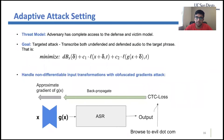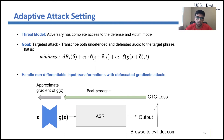The evaluation is more interesting in the adaptive attack setting, where we assume the adversary has complete access to the defense and victim model. The attacker modifies the objective to transcribe both x+delta and g(x+delta) to the target transcription t. To do this, the attacker must differentiate through both the ASR and the transformation function g all the way back to x to update it in the direction of the gradient.